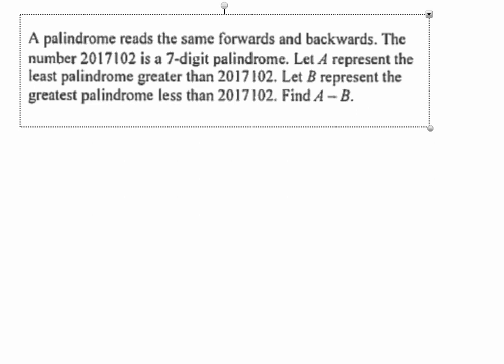A few of you were confused by what a palindrome was, but in the question it actually tells you specifically what it is—a number where the same digits read the same forwards as backwards. It can be numbers, it can also be letters and words. So all you had to do here was figure out what the next palindrome is.